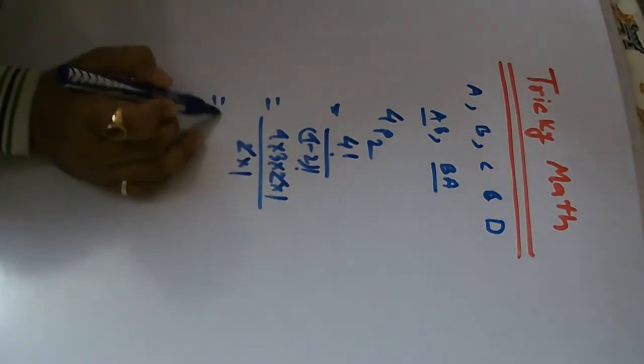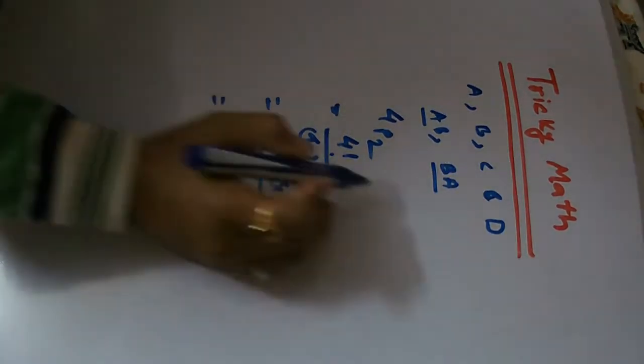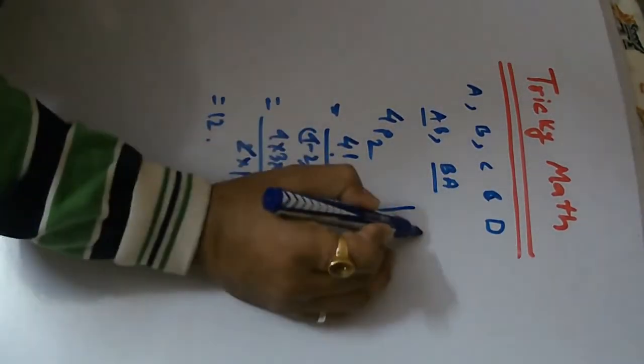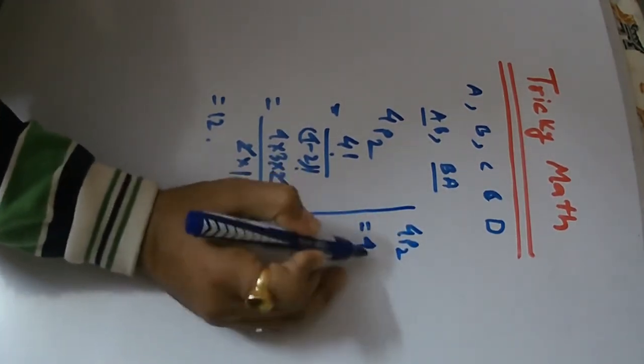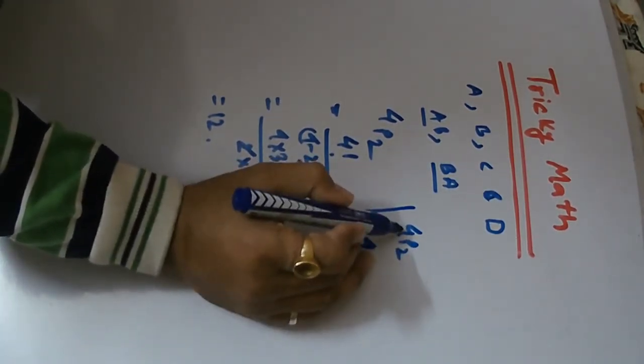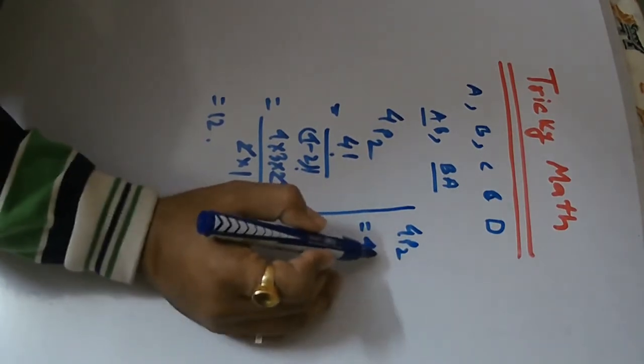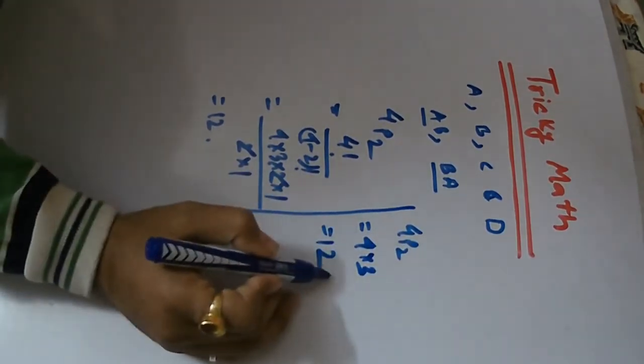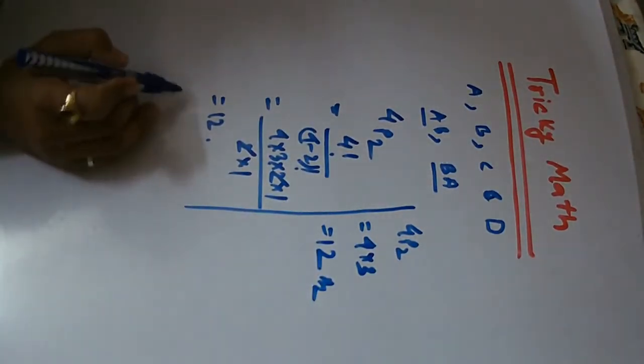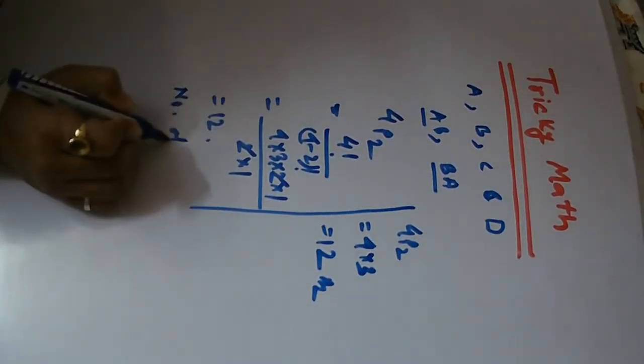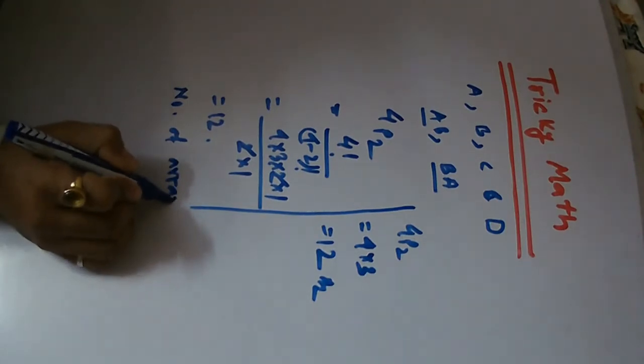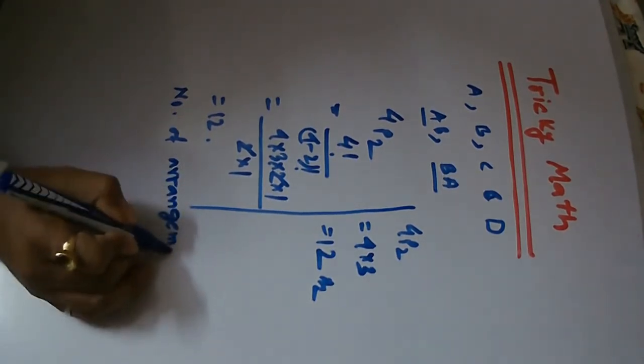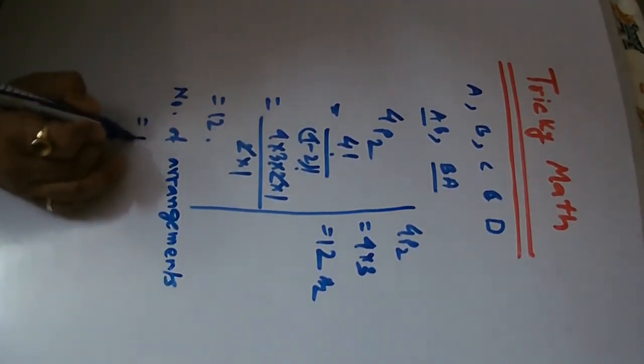So the answer is 4P2 equal to 4 into 3, which equals 12. This is our final answer.